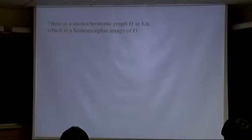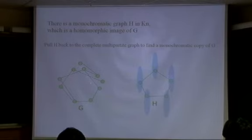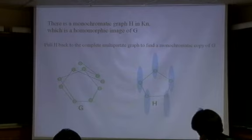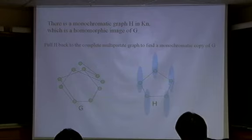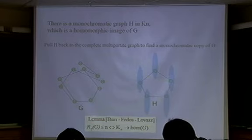This gives a 2-edge-coloring of the complete graph KN. By our assumption, in this 2-edge-coloring of KN, I find a monochromatic subgraph which is a homomorphic image of G. There's a homomorphic image, meaning I have G mapping to a monochromatic structure where each vertex of G maps to a complete bipartite graph piece. I make sure each part is big enough — small compared to the huge original, but big enough — so I can pull back to get a monochromatic copy of G.